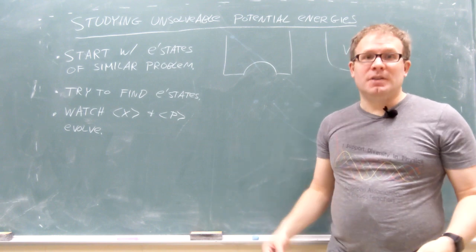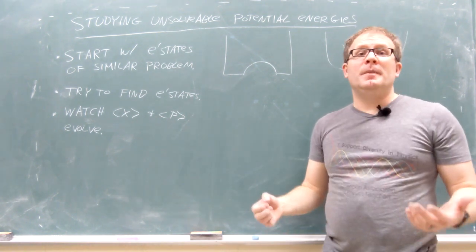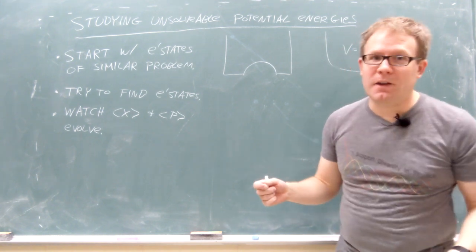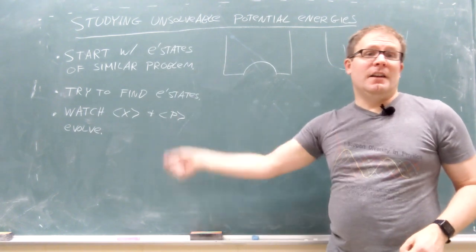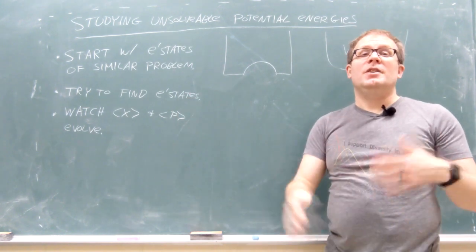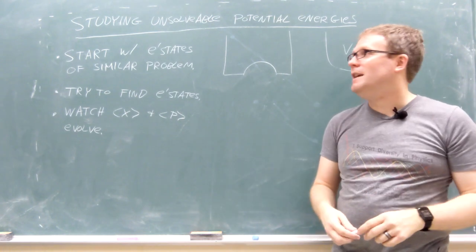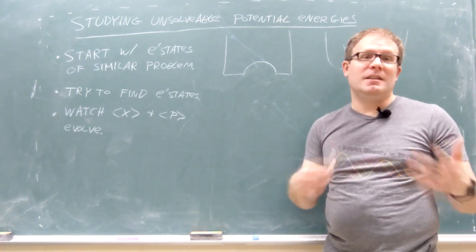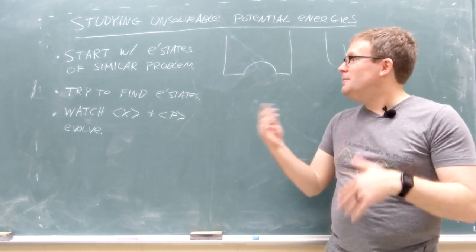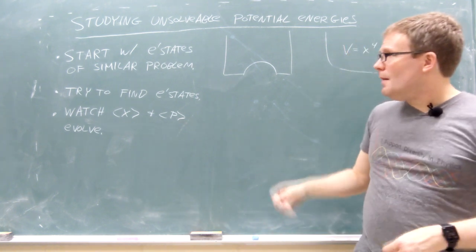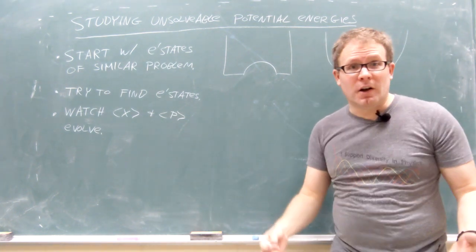So what do you do with these problems that you don't have an analytical solution to? What I want us to look at as options in this video is three different options. This is not the only approaches. You probably have a quantum mechanics two course that'll look at a lot of other options, different ways you can take a problem you know the answer to and kind of perturb it into a problem you don't have the answer to.